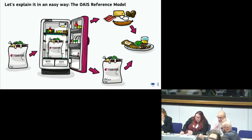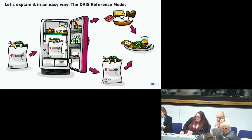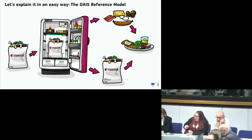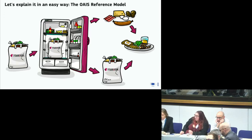Then I have two strategies for getting my information out of the fridge. I can either have been so prepared that my archival information package as a submission information package contained everything I needed to do my dissemination — so I just take my bag out and cook my meal. Or I might need to get the information from a lot of different packages to create my meal.